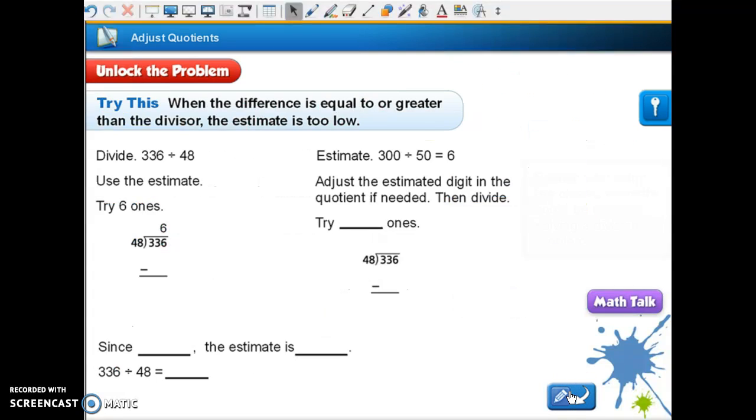All right, now we are on page 92 at the top. It says Try This: when the difference is equal to or greater than the divisor, the estimate is too low. Equal to or greater, why would the estimate be too low if when you subtracted it was equal to the divisor? What could you have done?